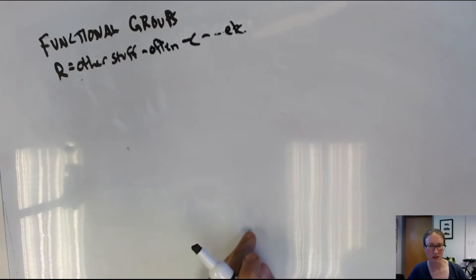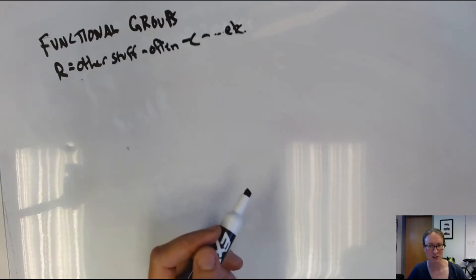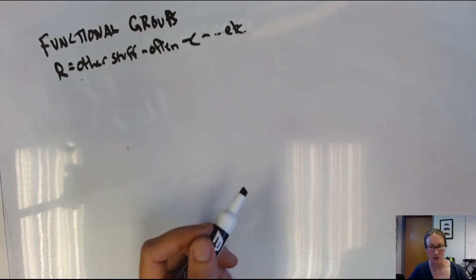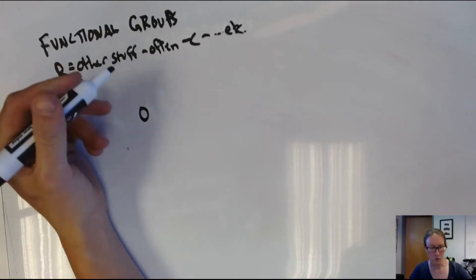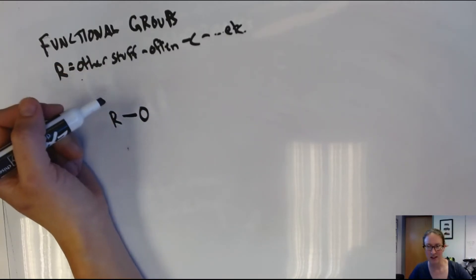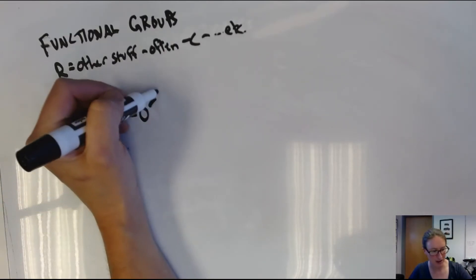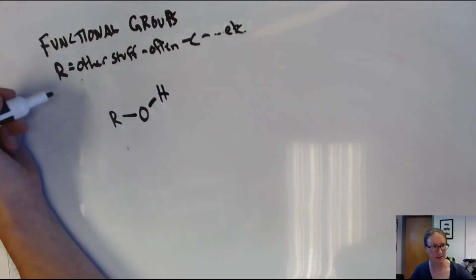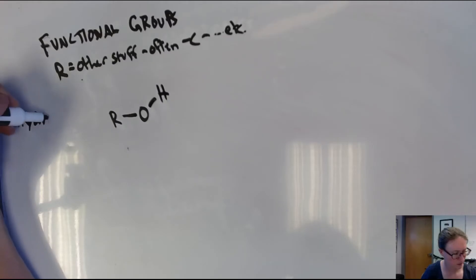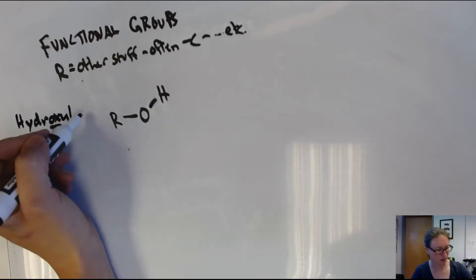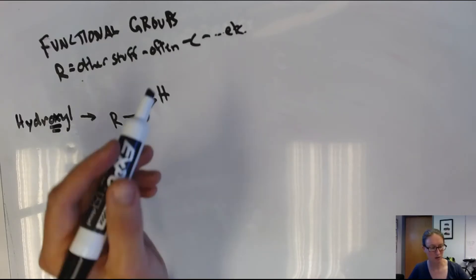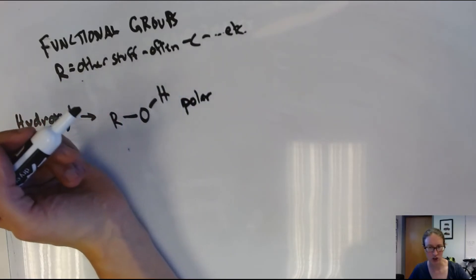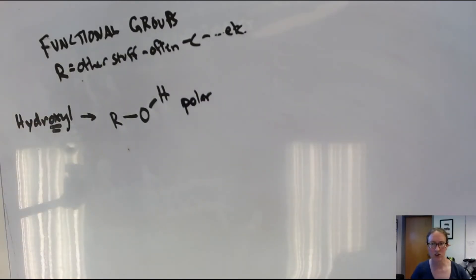For drawing these out, I'm going to use the generic letter R to symbolize other stuff connected to a given functional group — often a carbon and then some other stuff. One motif that's going to appear over and over again is that of an oxygen atom bonded to something. Oxygen is missing two electrons in its valence shell, so it typically wants to bond to two other things, and it also has a fairly high electronegativity. In one configuration, that oxygen will bind to some kind of R group, and at its other end it's going to bond to a hydrogen atom. The end result of this is what's called a hydroxyl group — it has 'ox' in it for oxygen. Because oxygen has that electronegative attitude, these hydroxyl groups are polar.